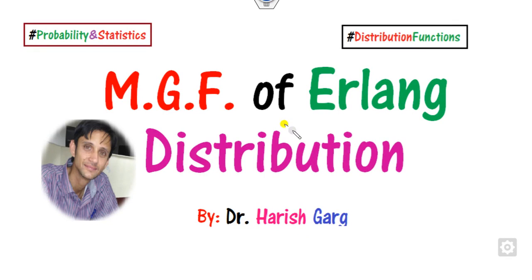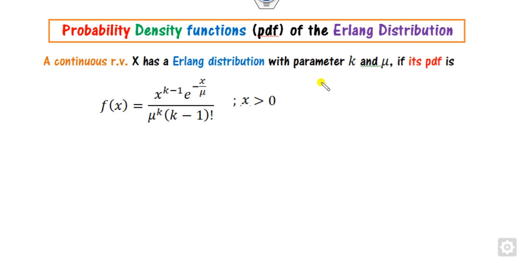Hello everyone, welcome to the next class on probability and statistics. In this class we will see how you can define the MGF of the Erlang distribution. What is the PDF of the Erlang distribution? As we discussed, there are two unknown parameters: k and mu, defined as shown.